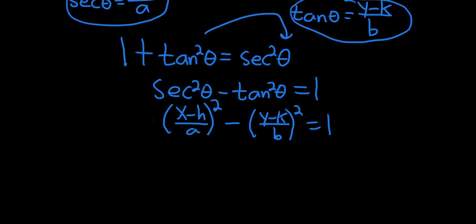So now the magic happens. This will be x minus h squared over a squared minus y minus k squared over b squared, and this equals one.